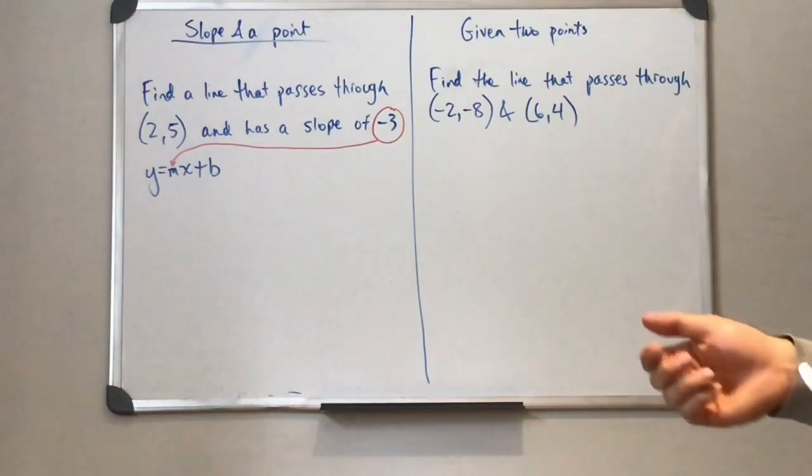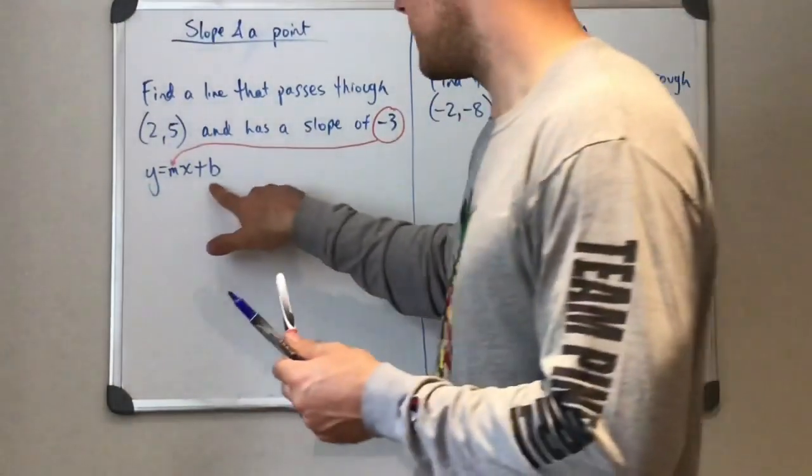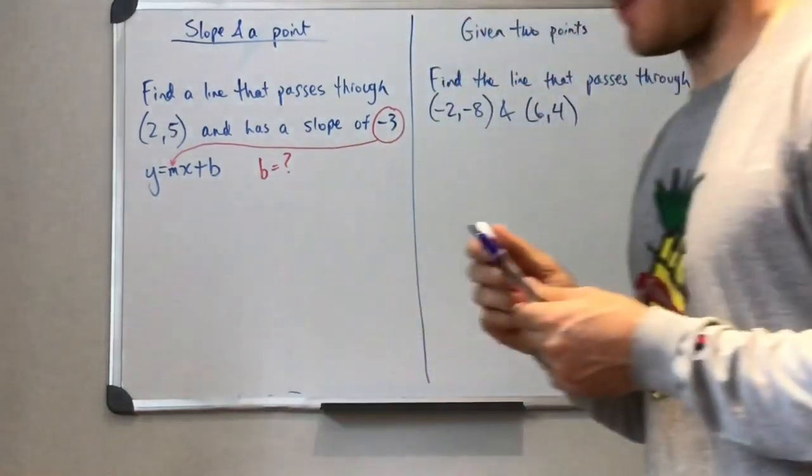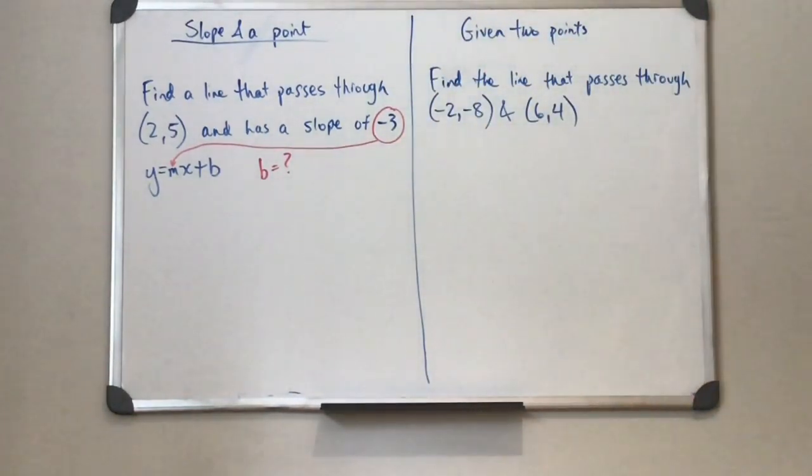So this negative 3 is our slope, so I can immediately put that in for m. But I don't know a y intercept, and our y intercept is b. So we don't know that value. Our final equation in y equals mx plus b always has the m filled in for a number, and the b filled in for a number.